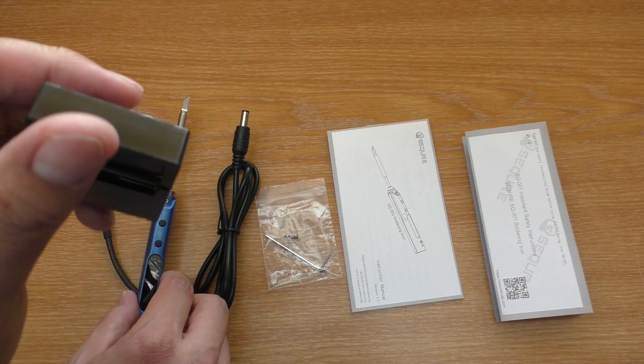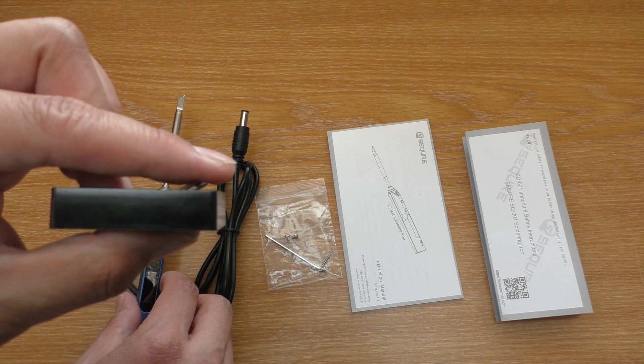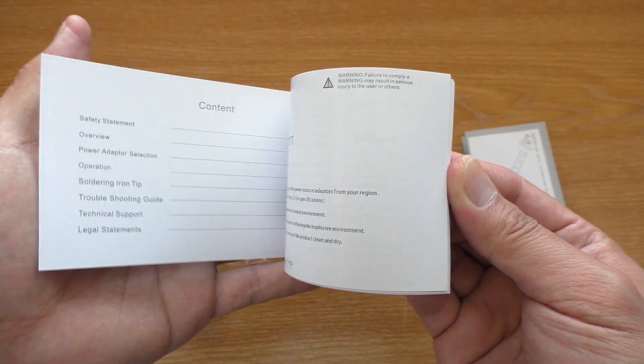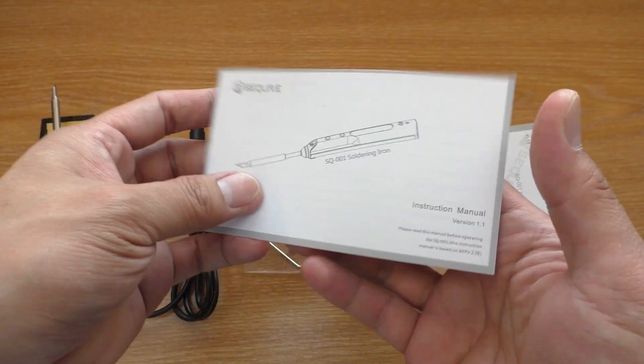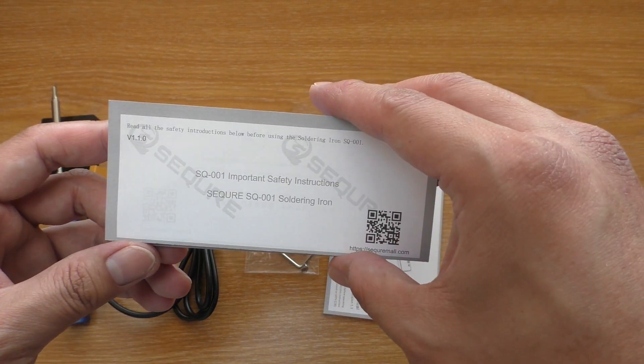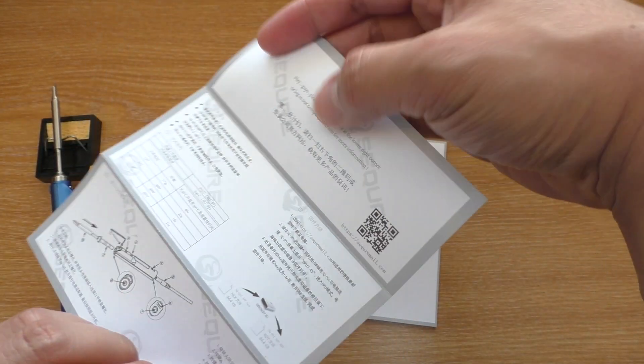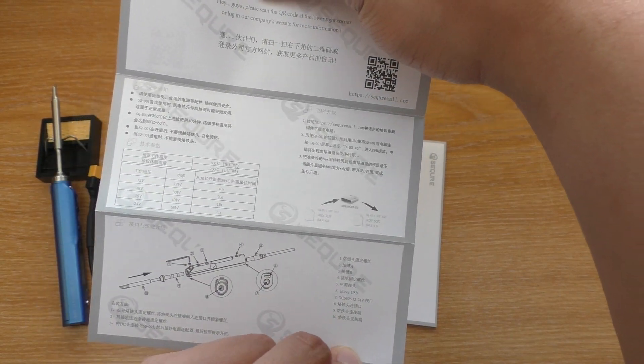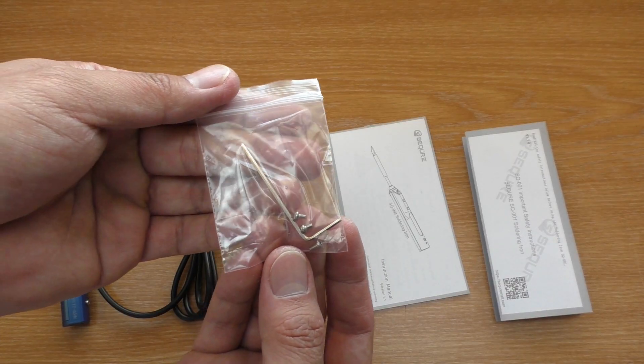Next we have the stand with a sponge. A manual. A safety instruction. And spare screws with Allen key.